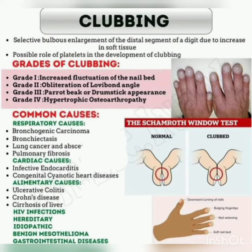There are four grades of clubbing. Grade one is increased fluctuation of the nail bed. Grade two is obliteration of the Lovibond angle. Grade three is parrot beak or drumstick appearance. Grade four is hypertrophic osteoarthropathy.